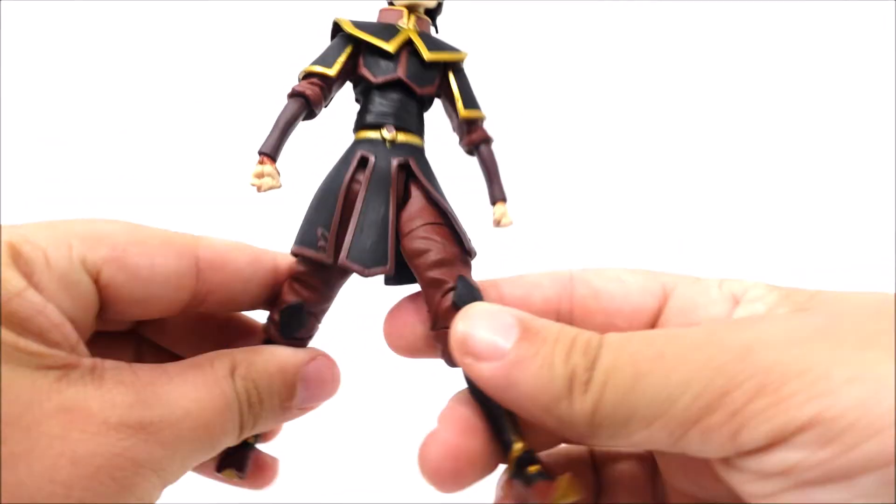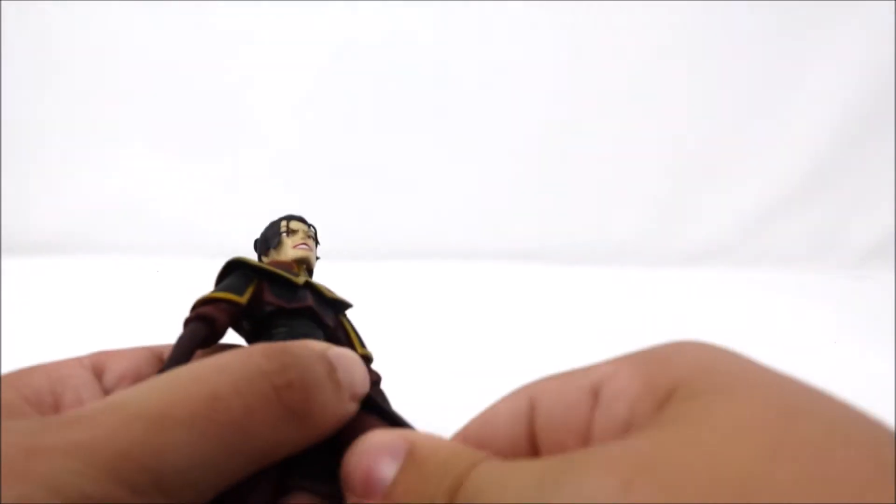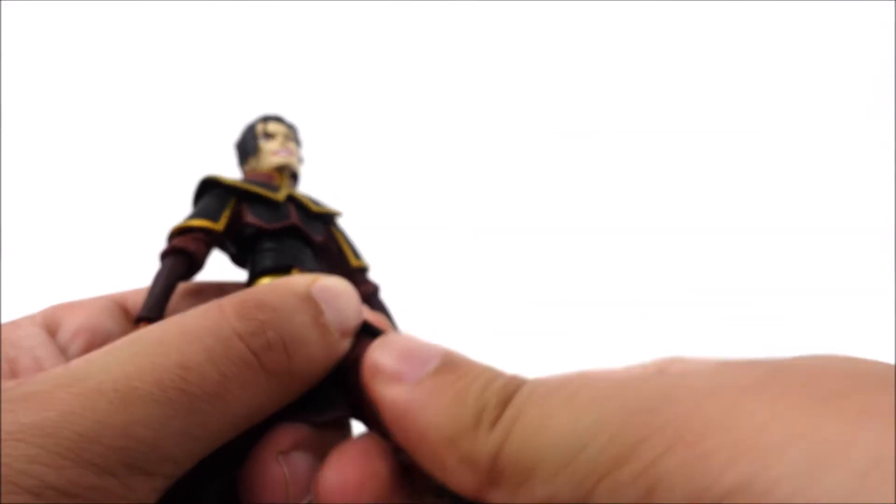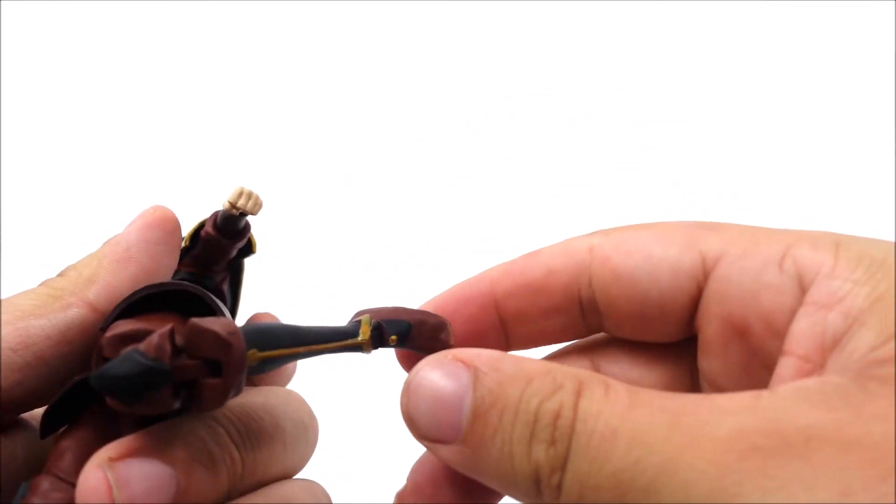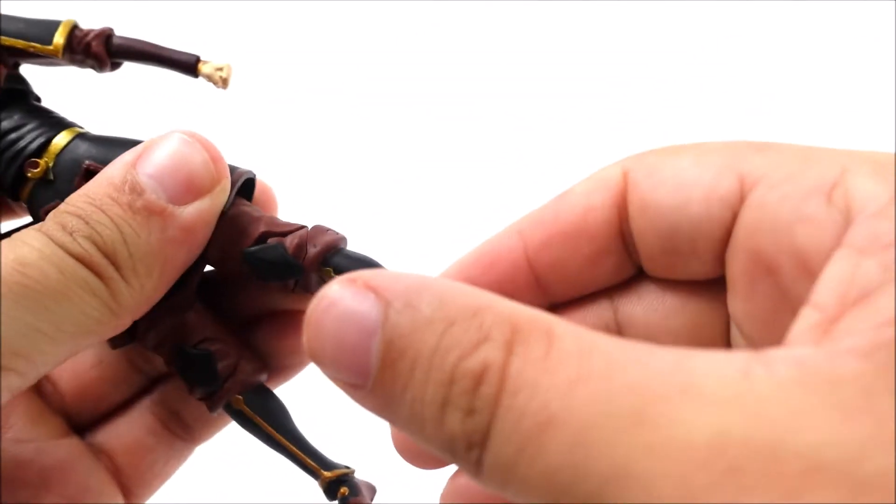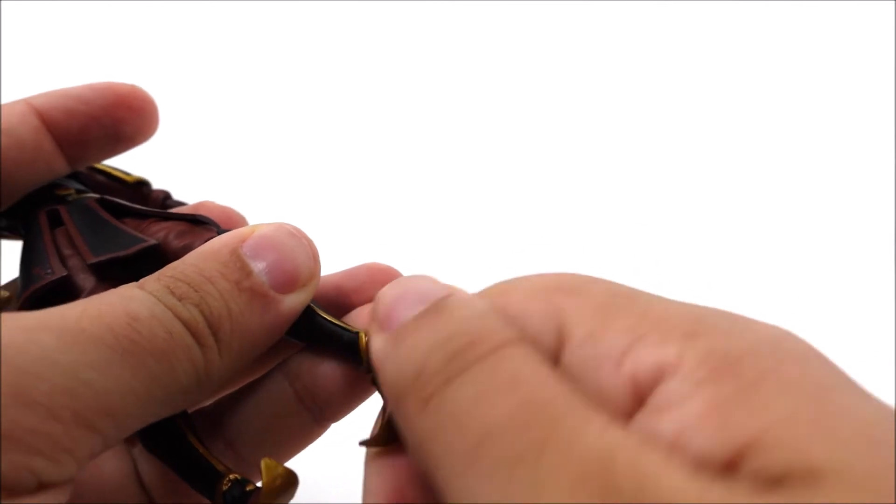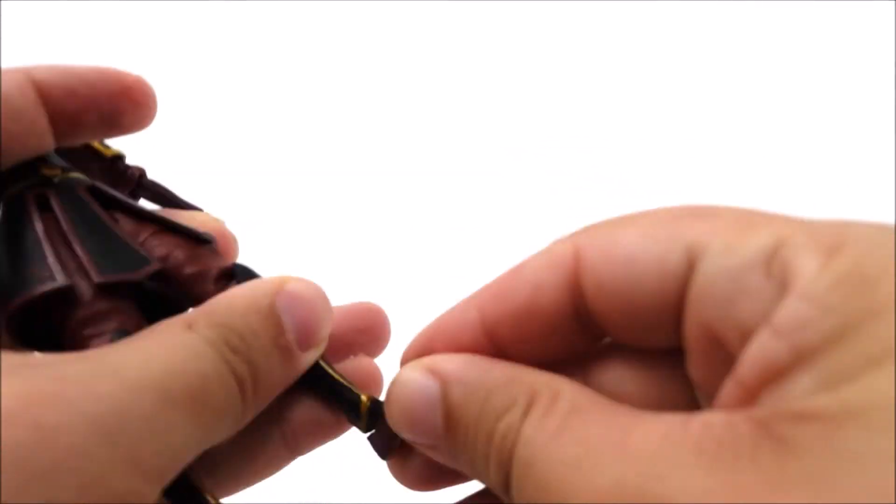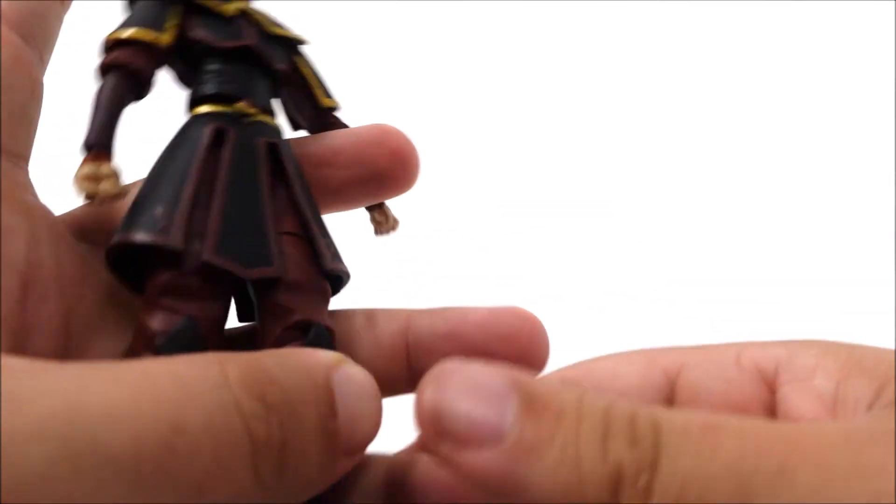The legs do move out pretty well. You got a thigh rotation right here, very tight though. You have double jointed knees, so that's pretty good. You do have a rotation of full twist and full up and down, but they do not have a swivel of back and forth for the ankle joints.